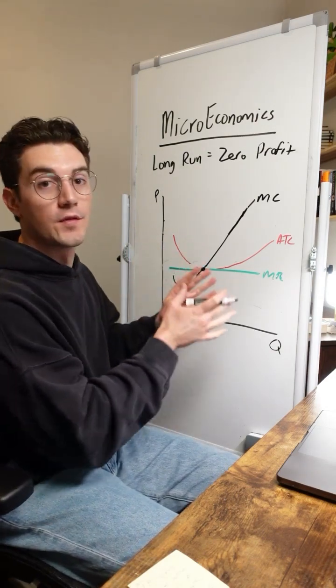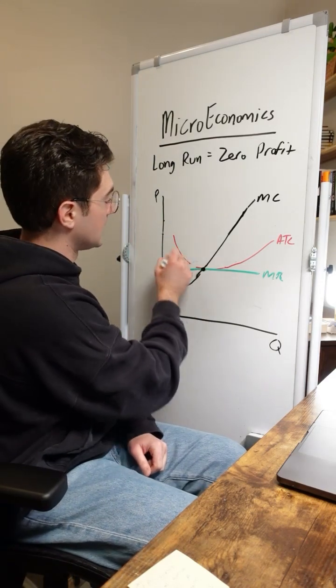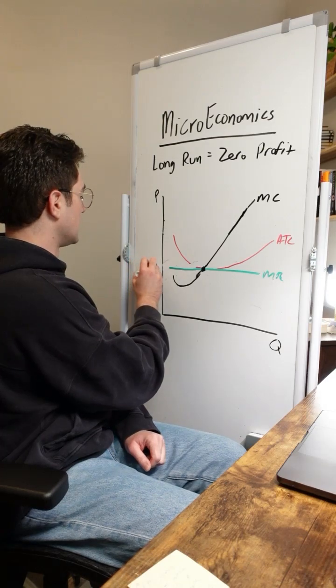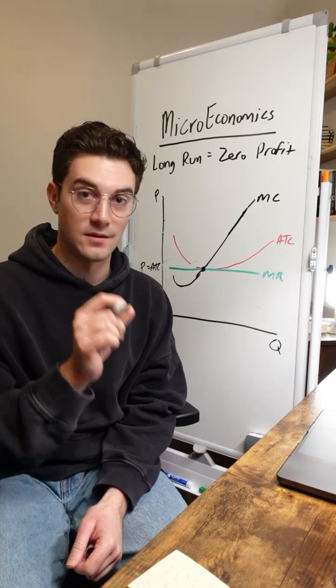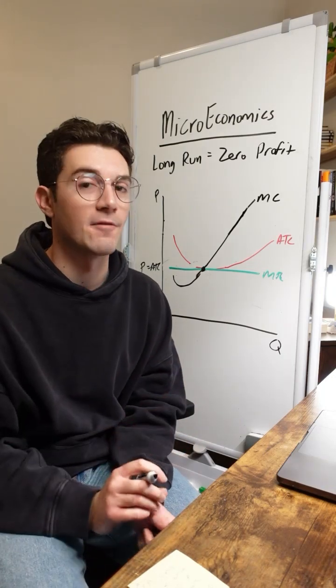This is what a perfectly competitive firm's cost curves should look like if they're in the long run. The MR, MC, and ATC curves all intersect at one point, meaning that P equals ATC. All the income that the firm is generating from consumers in the price that they're charging them is going right towards average total cost.